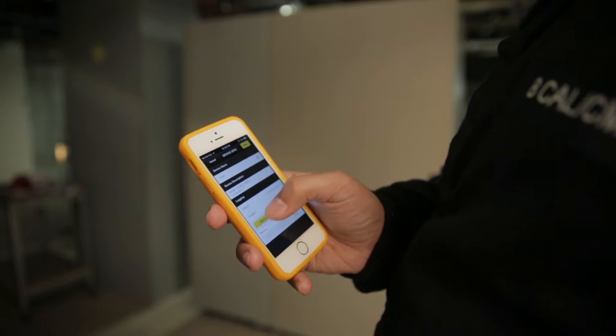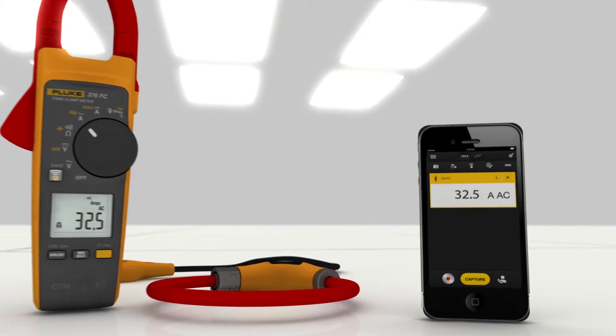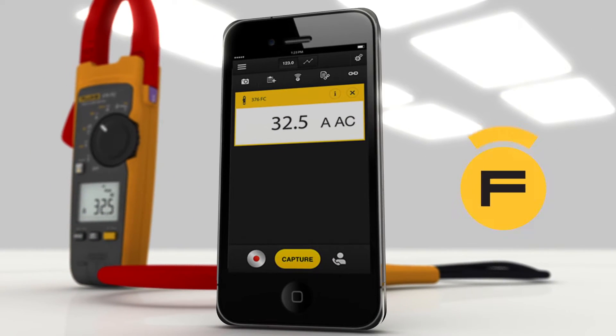From a safe distance, use your smartphone with the Fluke Connect mobile app to see, save and share measurements logged by the clamp meter.